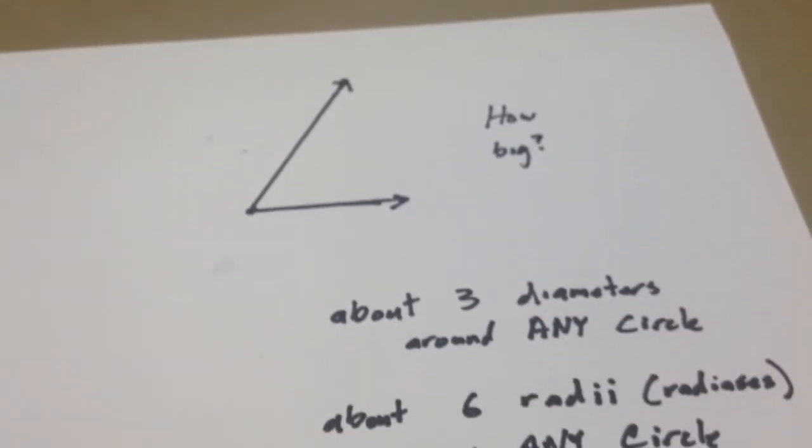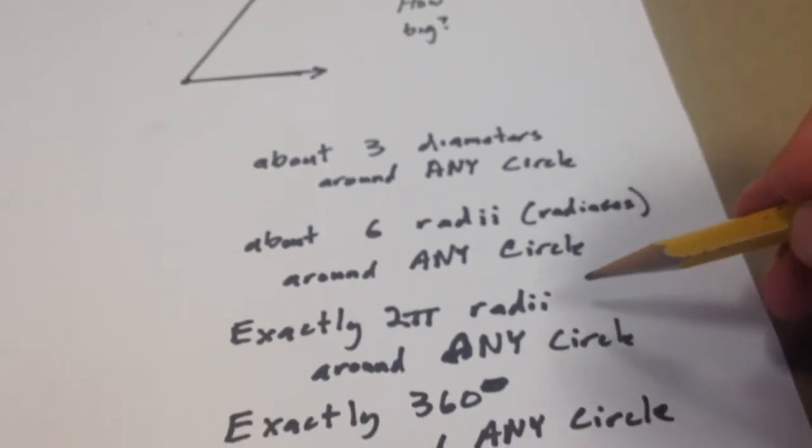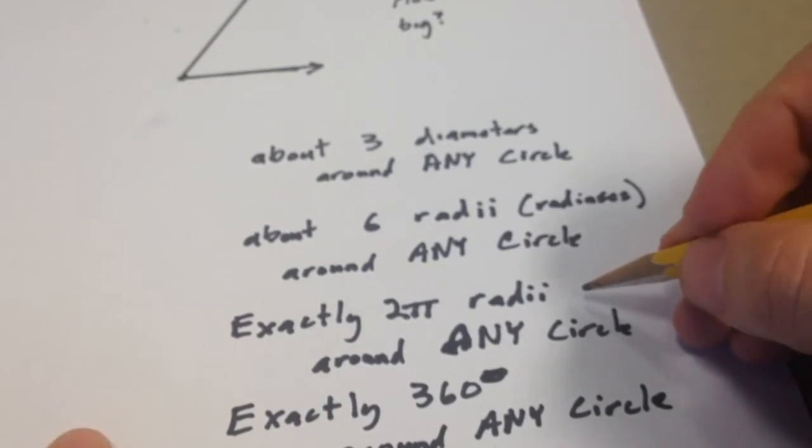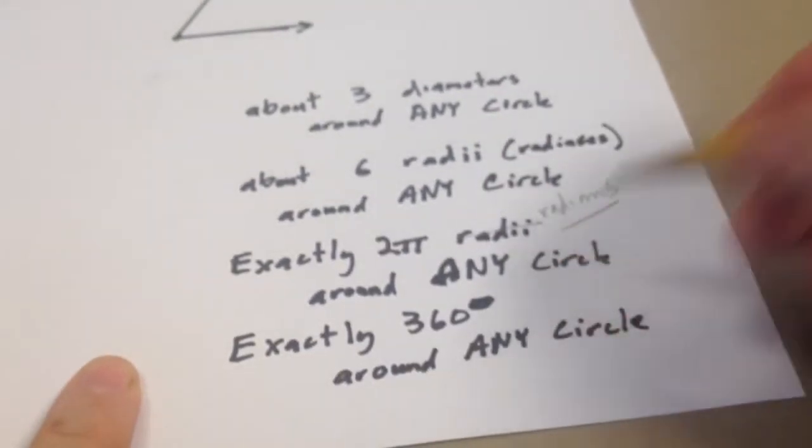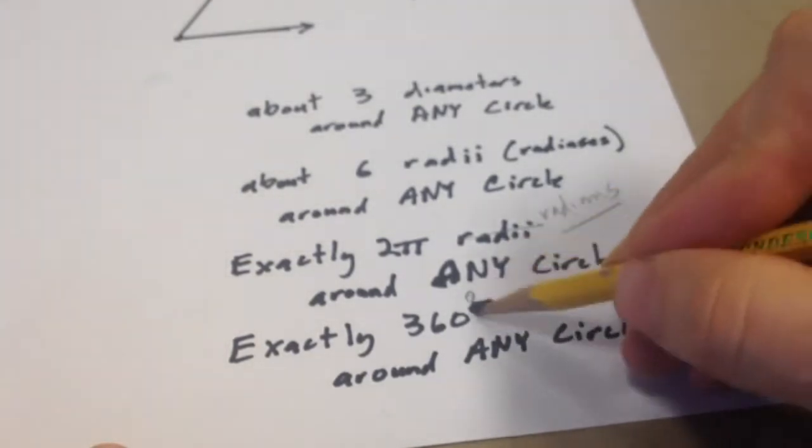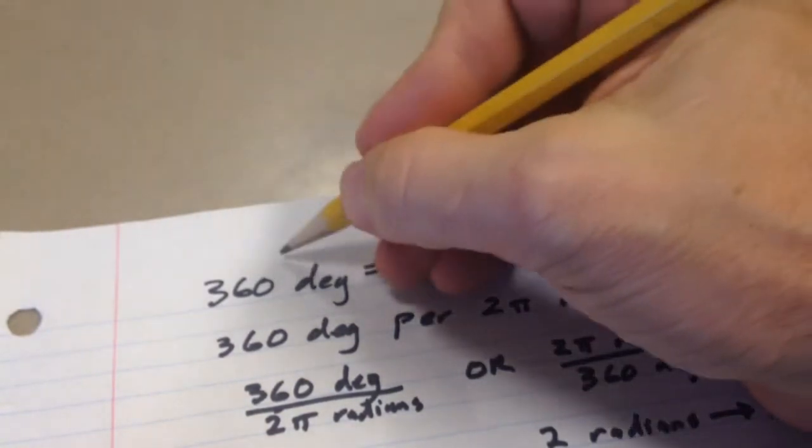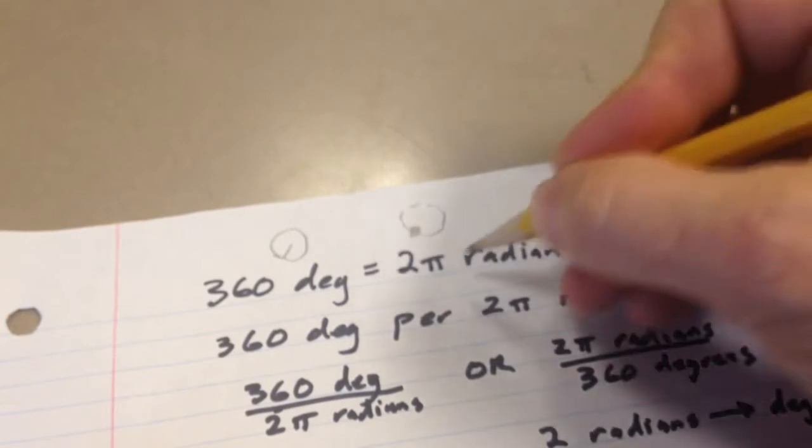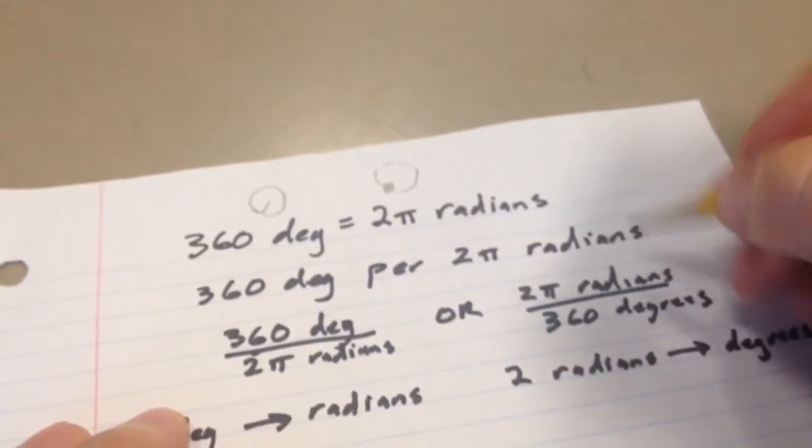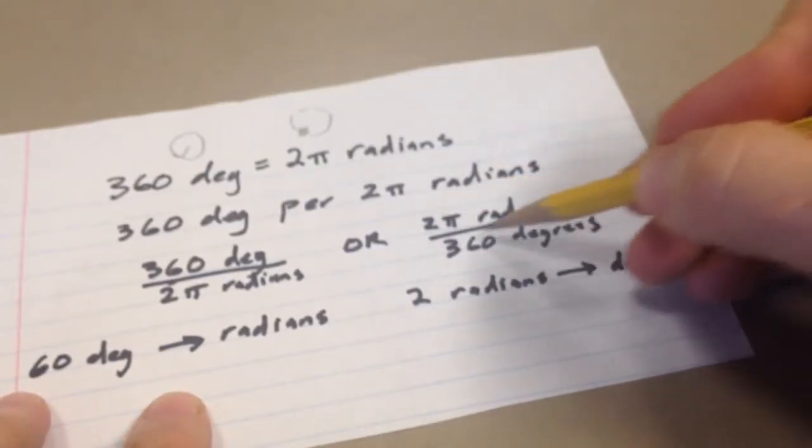Well, we know that about 3 diameters will go around any circle, or about 6 radii or radiuses will go around any circle, or exactly 2 pi radii will go around any circle. And if we're going to actually measure the angle, we can call it radians. And we also have another measure that we use, which is 360 degrees. My degree measure does link to around any circle. So we can create a conversion between radians and 360. These have a relationship. So 360 degrees is equal to 2 pi radians. So once again, for 360 degrees around the circle, I could also express that as 1, 2, 3, 4, 5, 6 radians plus a little bit more. That's the 2 pi radians around the circle. So there's 360 degrees per 2 pi radians, which I could write as 360 degrees for 2 pi radians. Or I could flip it over. I can say there are 2 pi radians for every 360 degrees.